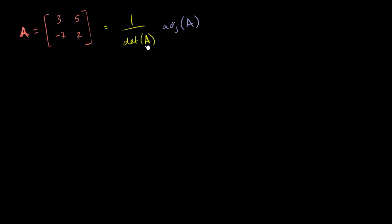So first, let's think about what the determinant of this matrix is. Well, we've seen this before. We just look along the two diagonals. It's 3 times 2 minus negative 7 times 5.